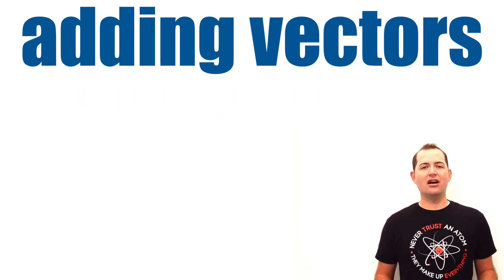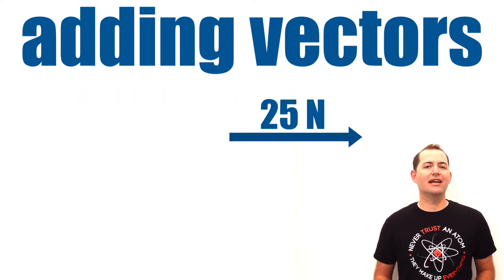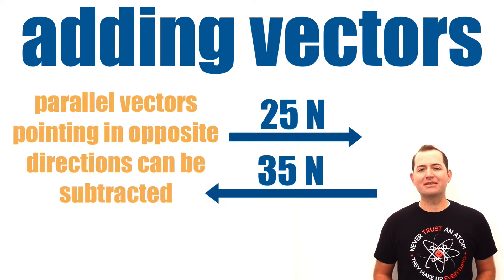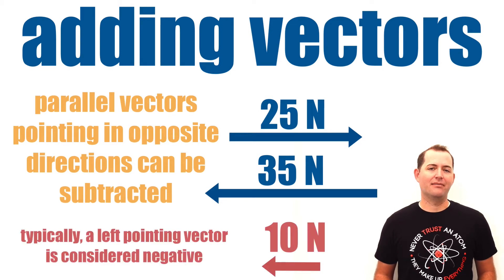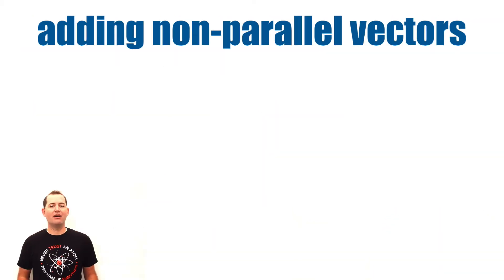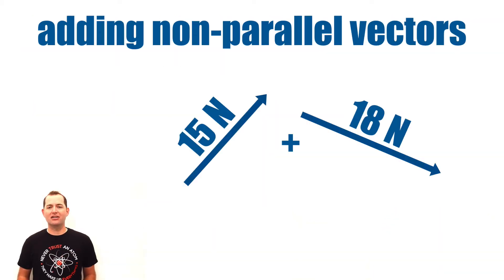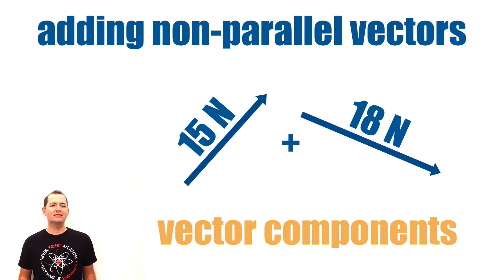We should also note that if our vectors are pointing in opposite directions but still parallel to each other, we simply subtract them. If, however, our vectors are not parallel to each other, we must determine their vector components.